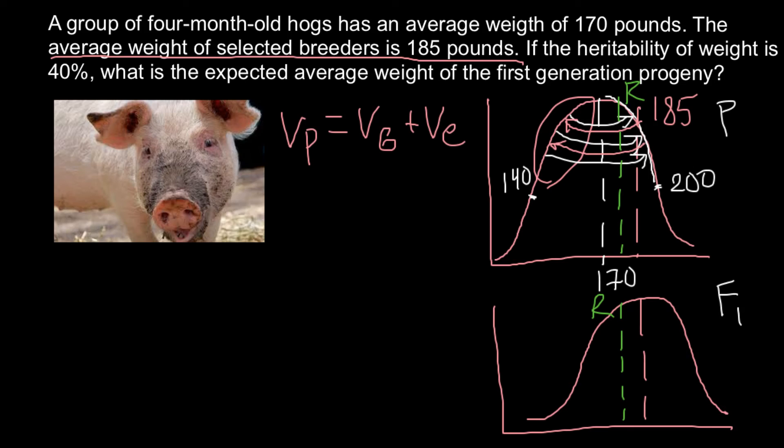And now I'm going to show you the formula that we're going to use in order to solve our problem. So R response to selection would equal H² multiplied by the selection differential. And as you see we can use all the numbers that we have here. H² would be 40% that we have to multiply by the mean of selection. And this is going to be 185 minus 170, so this would be the mean of selection and this is the mean of the original population. So the difference would be 15 pounds, so we have to multiply by 15, and we're going to get here 6 pounds.